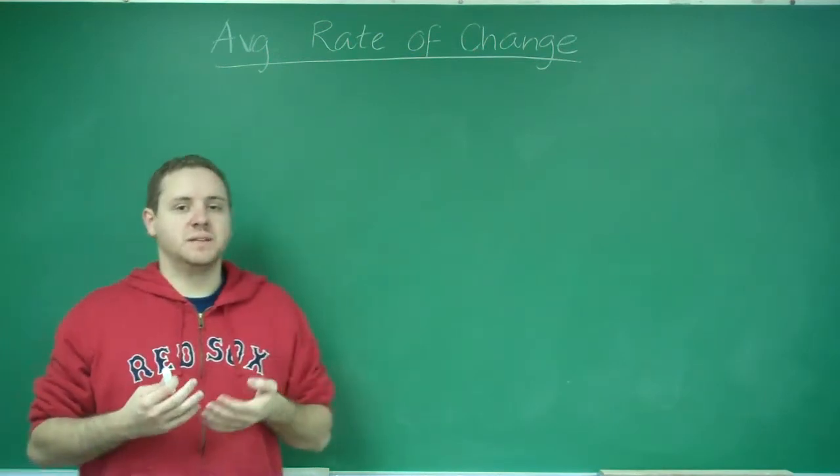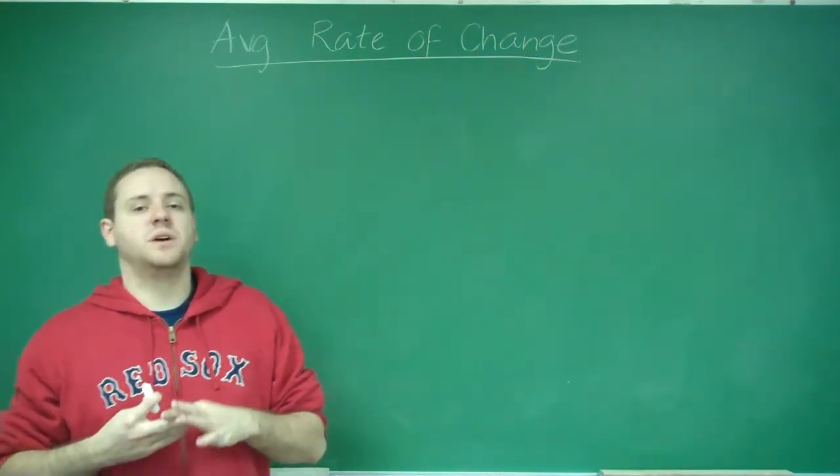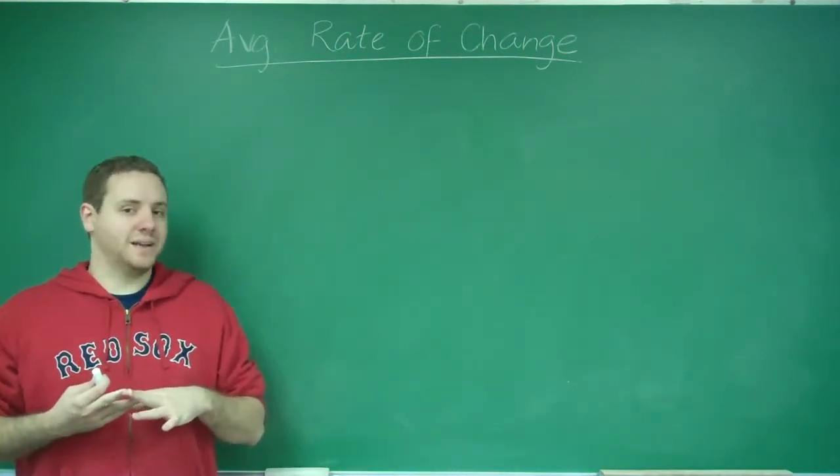The average rate of change, on the other hand, is a slope between two points, and a slope between two points is something you've done many times throughout algebra. It's just delta y over delta x.